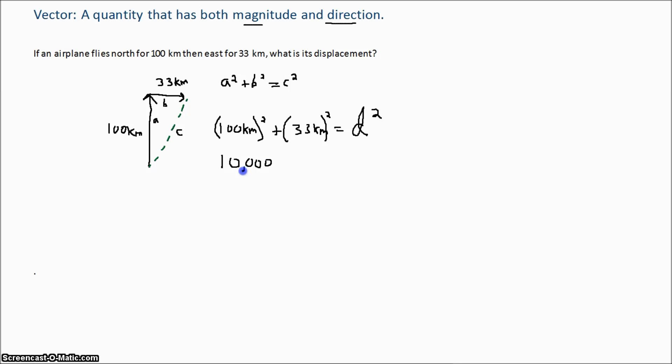Plus 1089 kilometers squared equals our displacement squared. So we add these up, 11,089 kilometers squared is equal to our displacement squared.